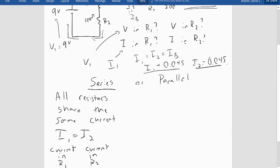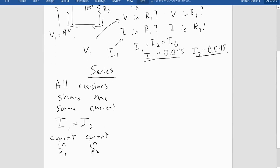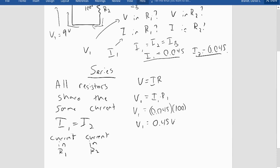Now let's talk about voltage. I'll set parallel aside for now and focus on series. To find voltage I have current and resistance, so I'll use Ohm's Law: V equals IR. To find V1, the voltage in resistor 1, I take current 1 times resistance 1. Current 1 is 0.045 and resistance 1 is 100 ohms, so V1 equals 4.5 volts.